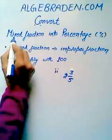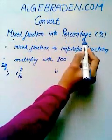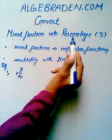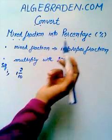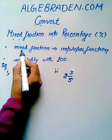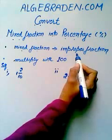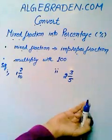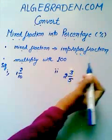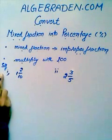Convert mixed fraction into percentage. To convert a mixed fraction into percentage, first we need to convert the mixed fraction into an improper fraction, and then multiply the improper fraction with 100.